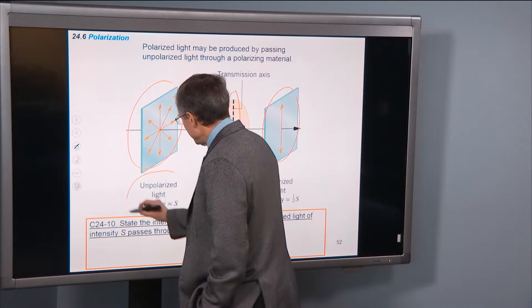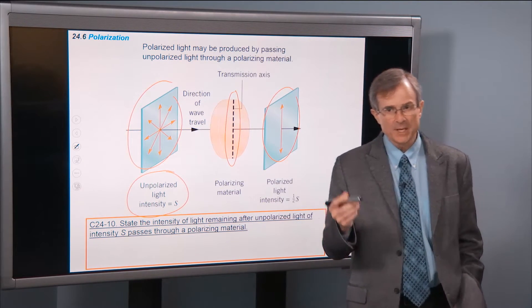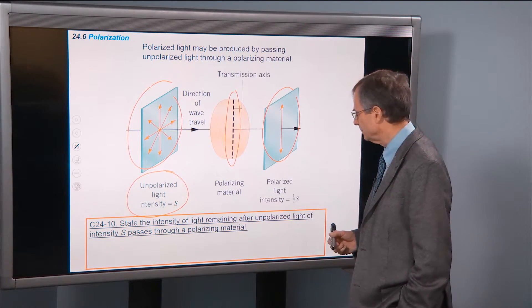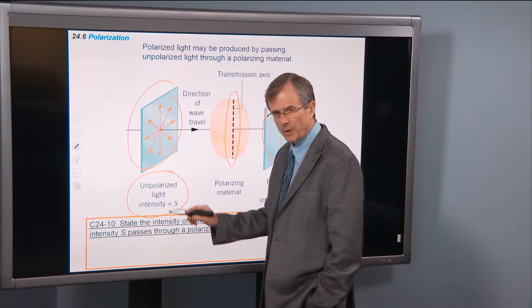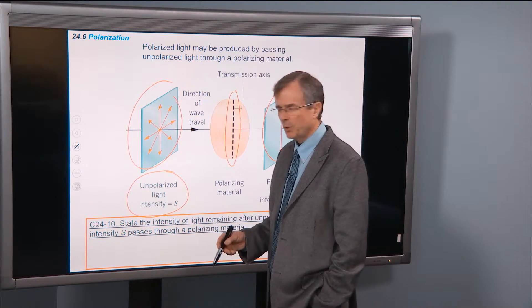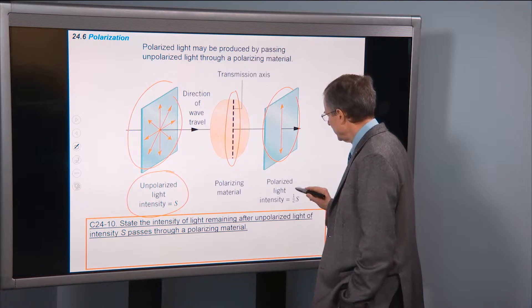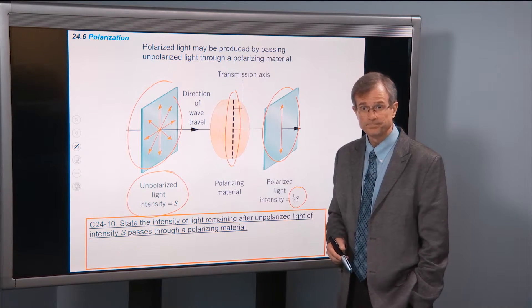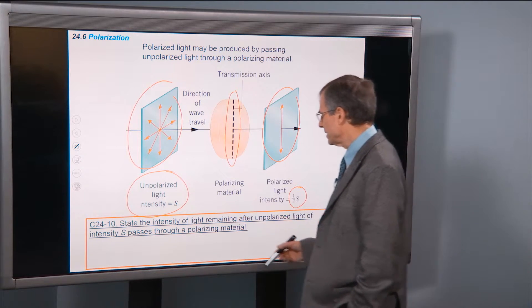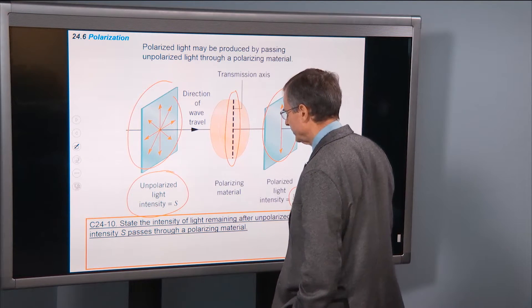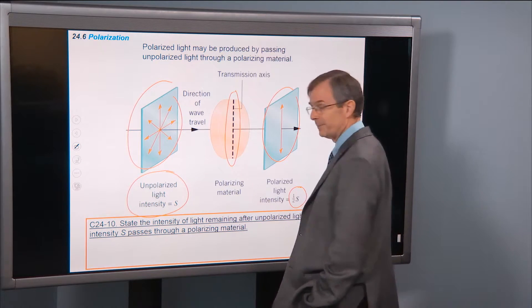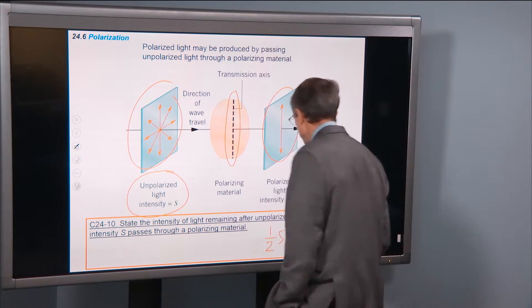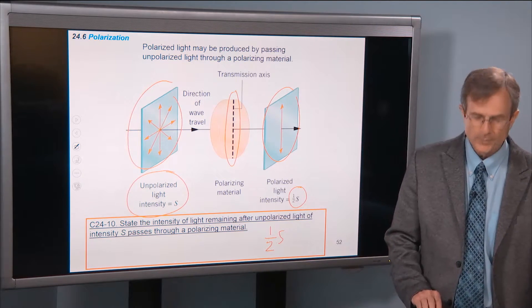If the intensity of light is S — remember the intensity is denoted by S, not I, for electromagnetic intensity — if it's unpolarized, completely randomly polarized, and passes through a polarizing material, then the intensity of the light that makes it through is one half. So the intensity of light remaining after unpolarized light of intensity S passes through a polarizing material is one half S. That's how much light is going to remain after passing through that polarizing filter.